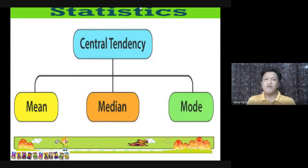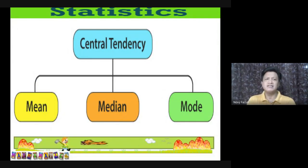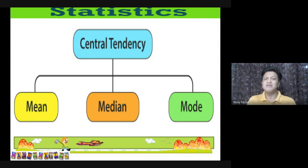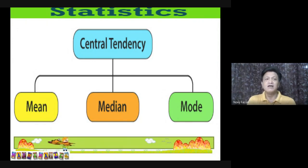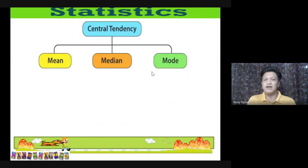So let's define — when we say central tendency, or measure of central tendency, this is also known as measures of location. A measure of central tendency is a numerical descriptive measure which locates the center of the distribution. It is a single central value that summarizes a set of numerical data. There are three: we have the mean, median, and mode.